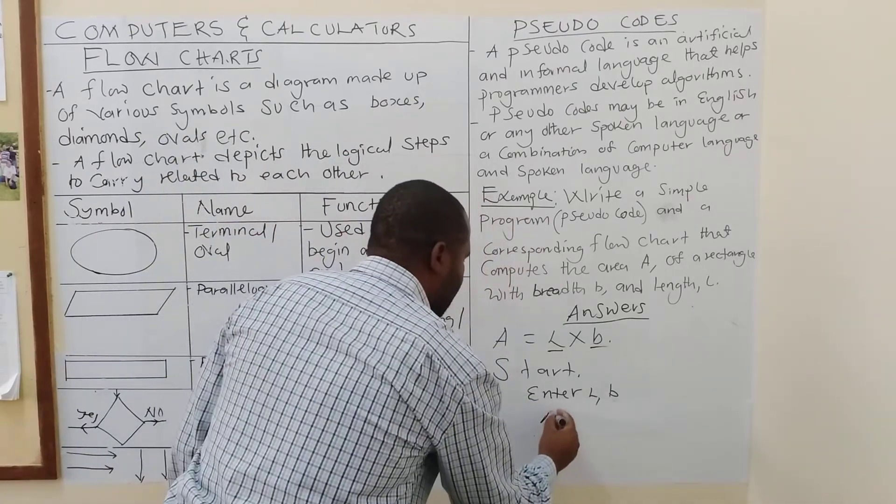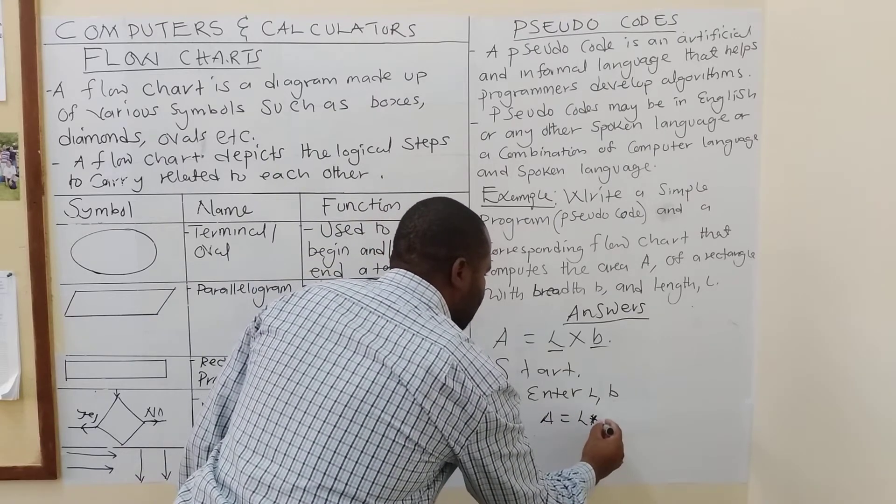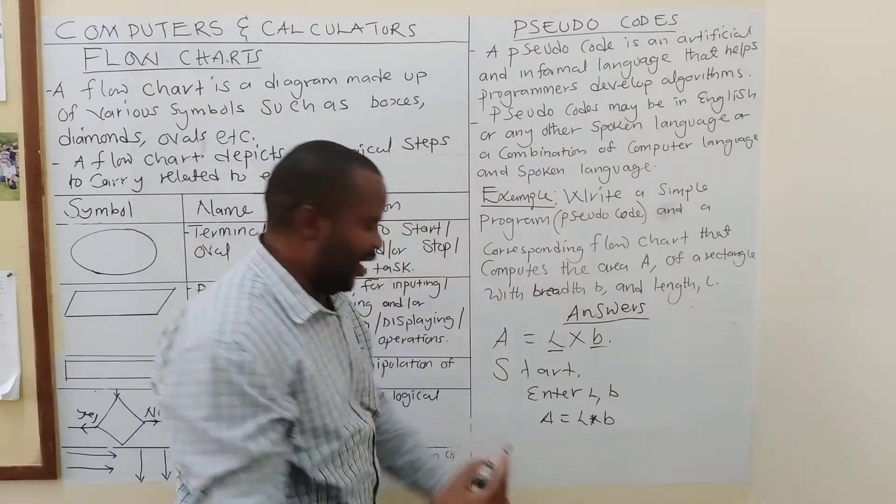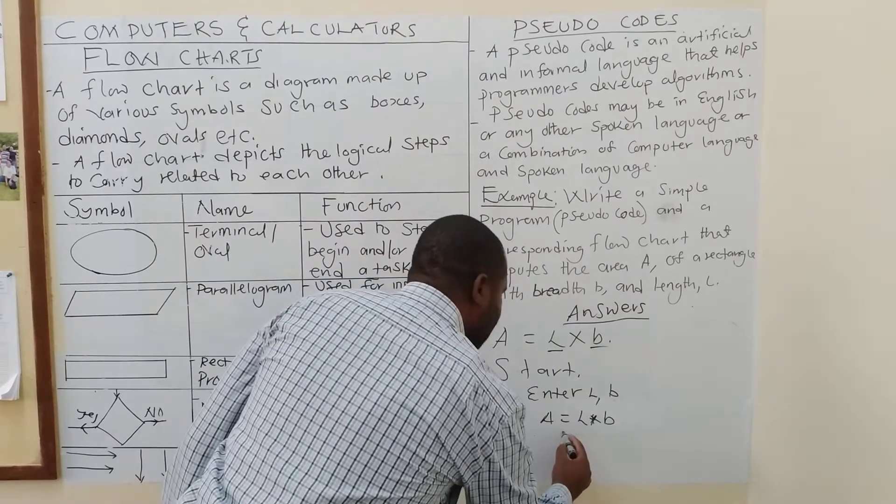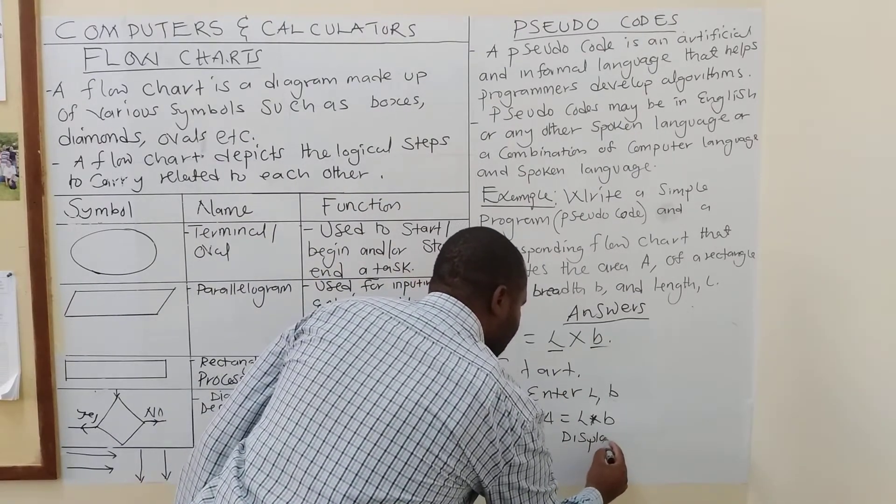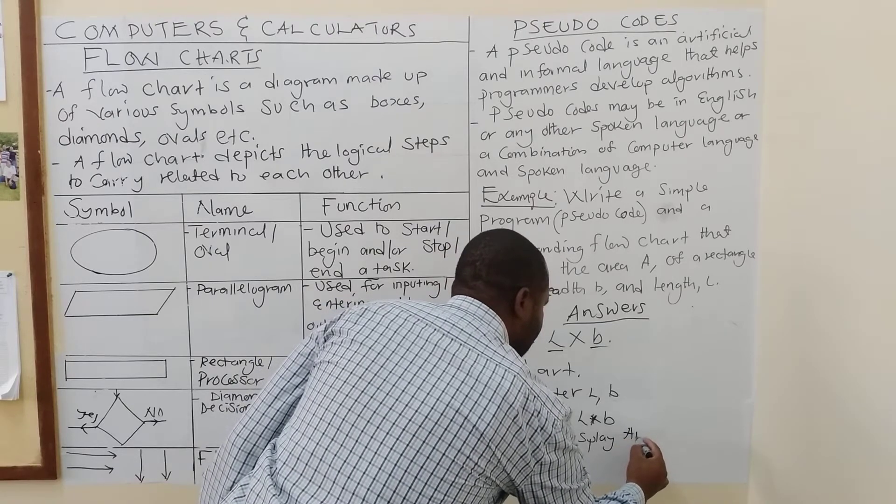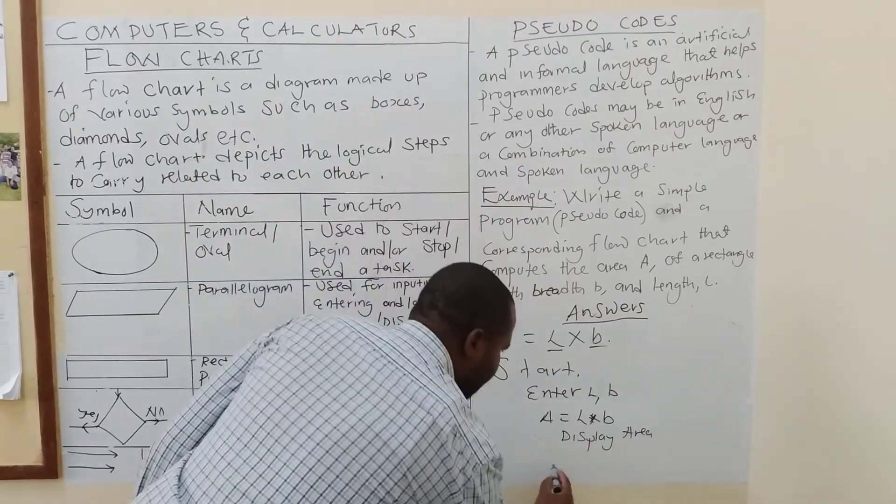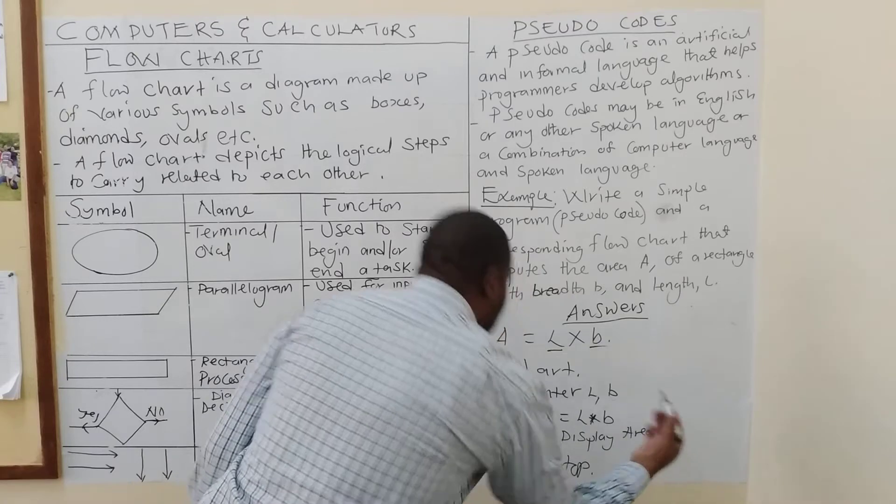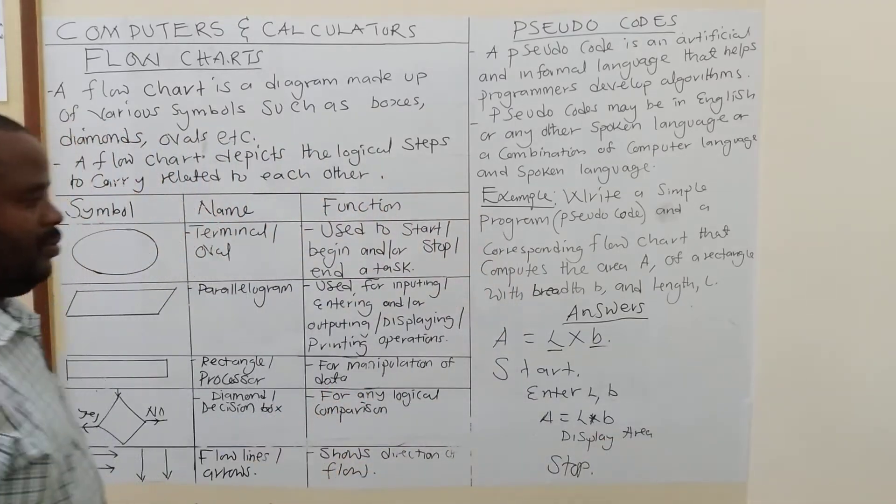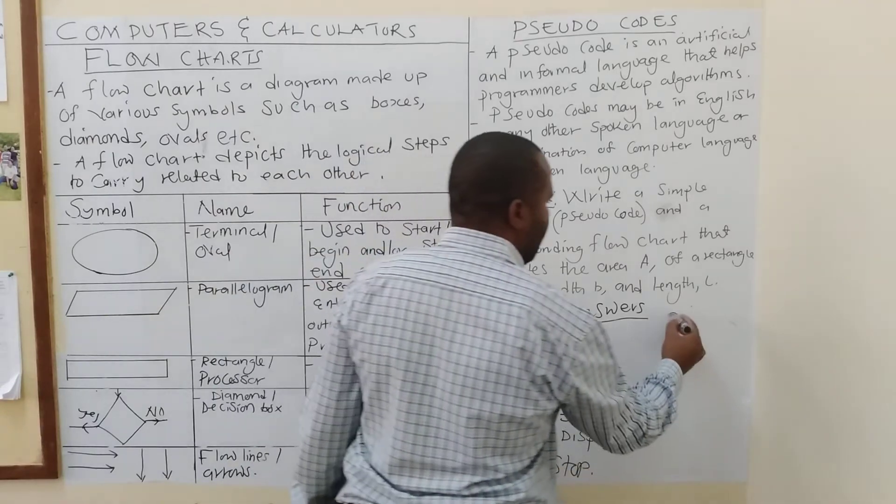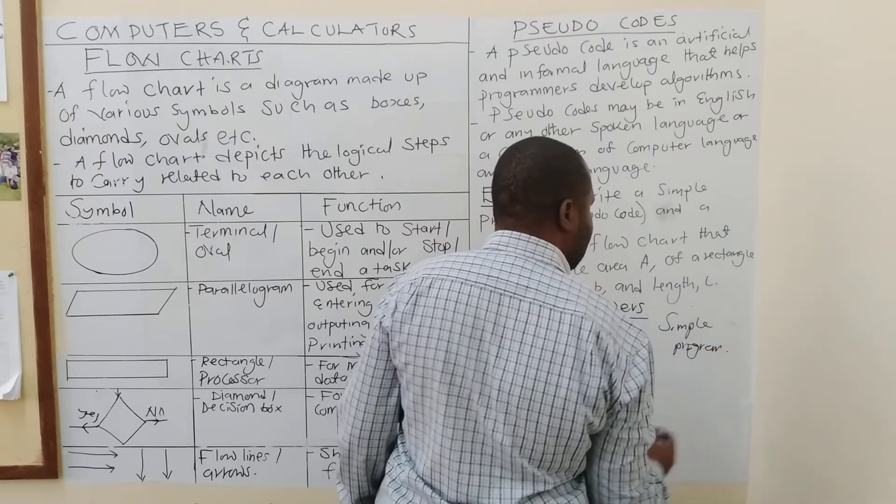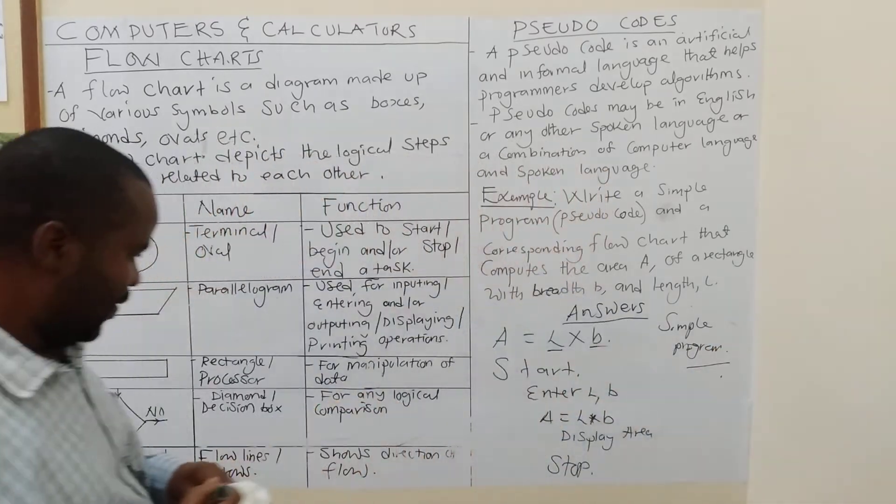So, that's how you are going to get the area there. Maybe you can say, area is L times B. Then, after that, what should happen? It has to give you. You can say, display area or A. Then, what happens? It has to stop. The moment you have an area, then that has to stop. So, this is done. Simple. I'm calling it a simple program.